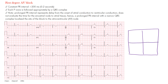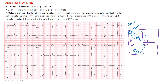If we review our conduction system using our box diagram of the heart — the right atrium, left atrium, right ventricle, and left ventricle — we have the sinus node up near the superior vena cava where normal conduction starts. From the sinus node, we have our AV node connected by internodal pathways. We have a Bachmann bundle to the left atrium, a HIS bundle, the right bundle branch, and the left bundle branch, which has two fascicles: a left anterior fascicle and a left posterior fascicle. That's how conduction travels from atrium to ventricles.